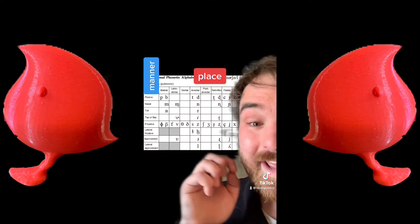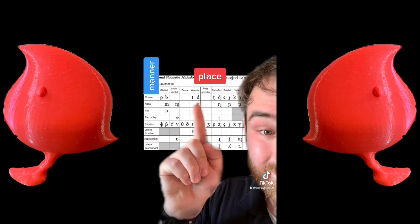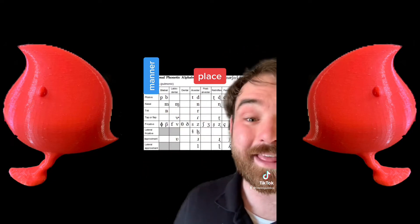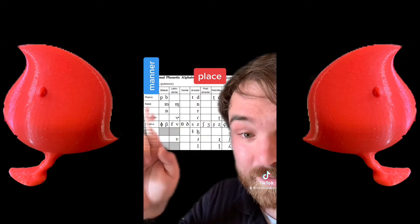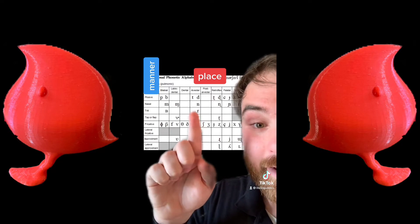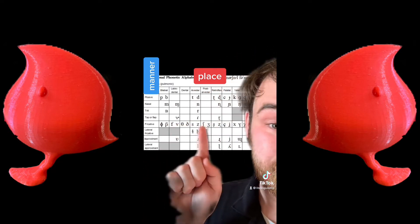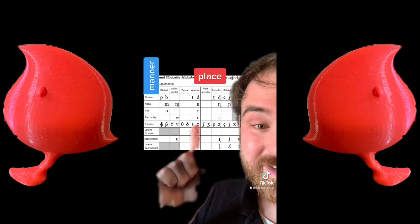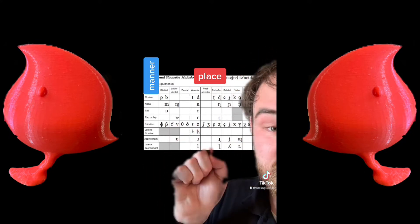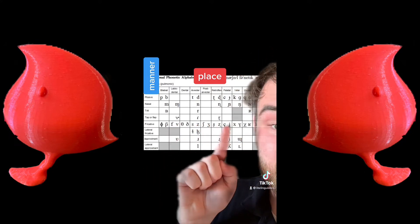Then we have nasals, like MM or N. We don't really have trills in English, but Spanish does, like RA. Keep going down to fricatives and you get to where there's a continuous airflow. These are sounds like FFF, SSS, SH, or CH.